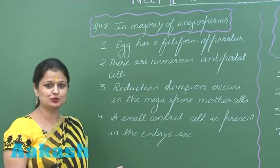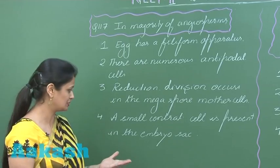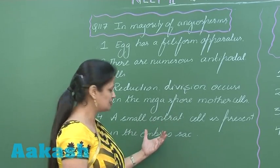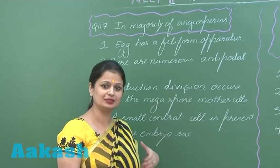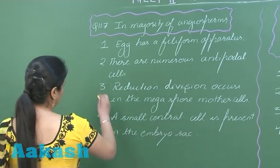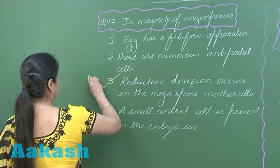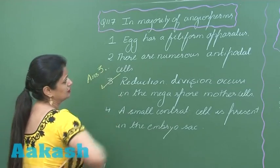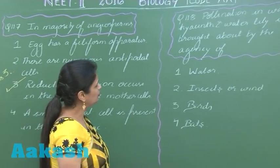Generally, antipodal cells are three in number. The statement that reduction division occurs in the megaspore mother cell is correct — in angiosperms there is sporic meiosis. The option stating a small central cell is present in the embryo sac is incorrect; it is a large central cell. So the right option is option number three.